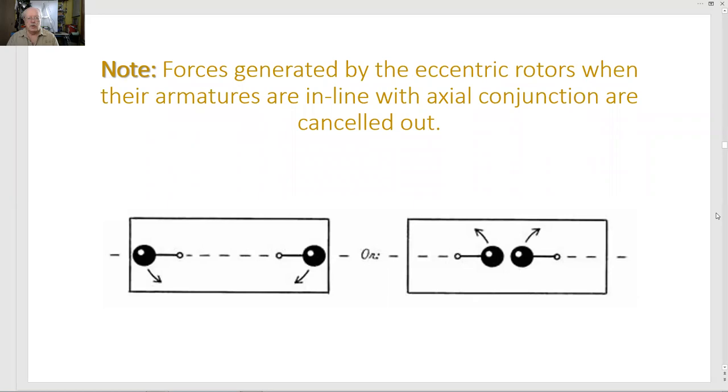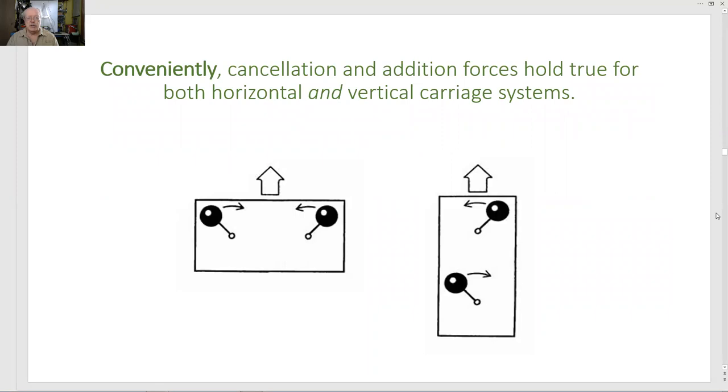Note, forces generated by the eccentric rotors when their armatures are in line with actual conjunction are canceled out. Conveniently, cancellation and addition forces hold true for both horizontal and vertical carriage systems.